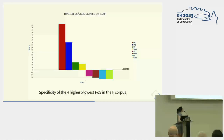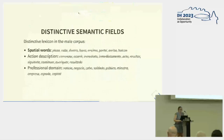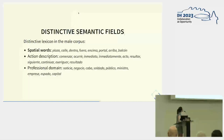In the case of the male corpus, we have quantifiers and cardinals, which also matches some of the results found in Rubitsky. Spatial words are one of the distinctive semantic fields, then words related to the description of action.